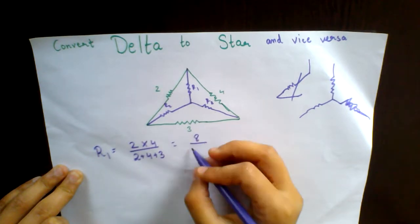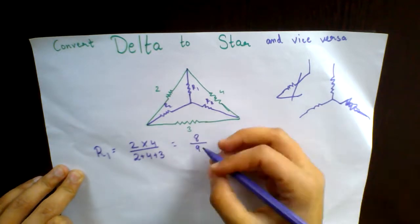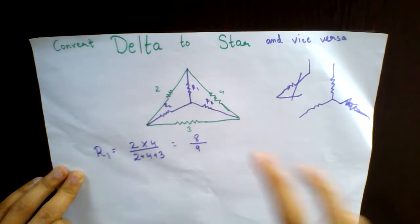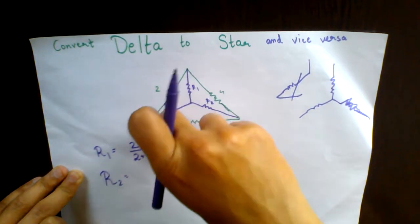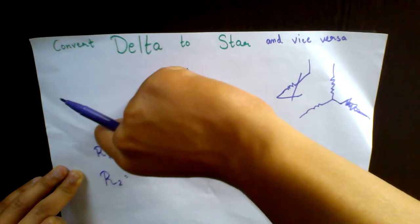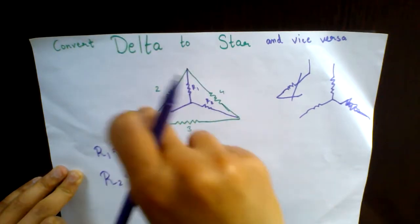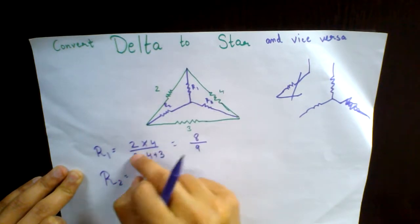And you can do the calculations. And then you have R2, which is 2 into 3 upon 2 plus 3 plus 4. So basically the denominator remains the same in all of it.